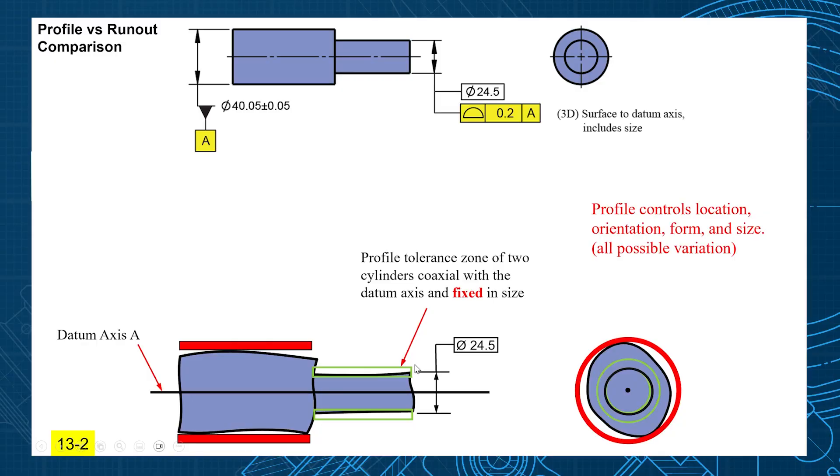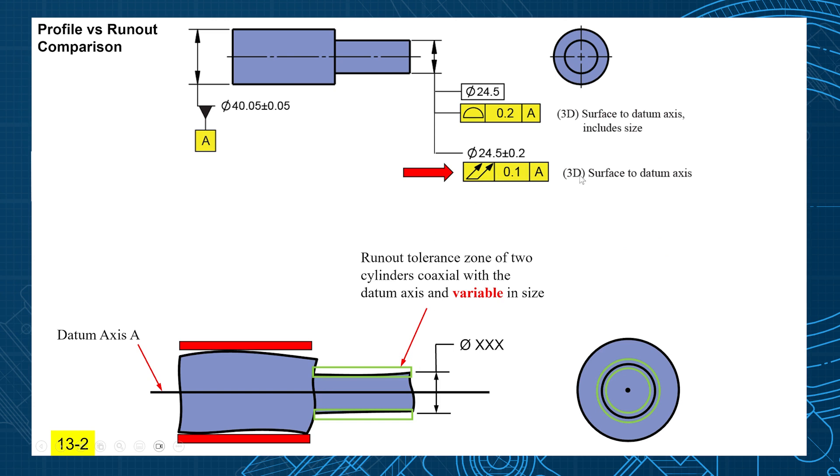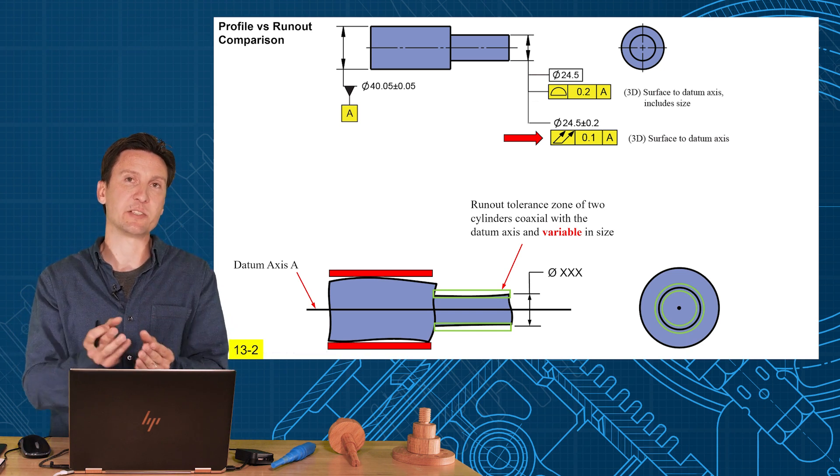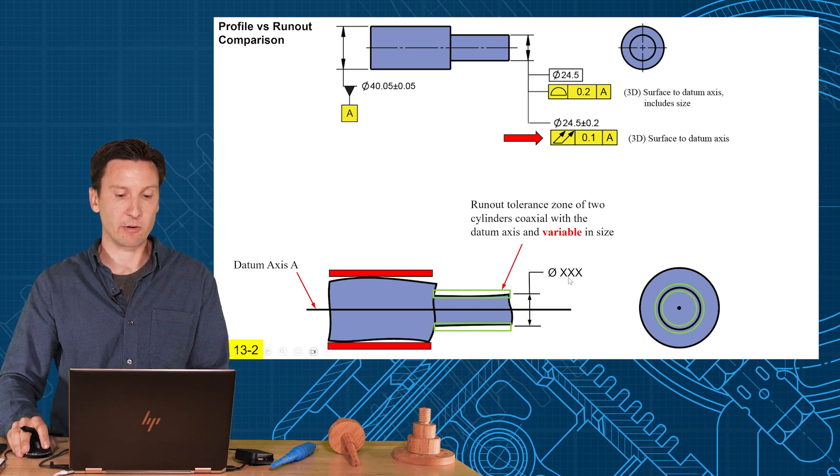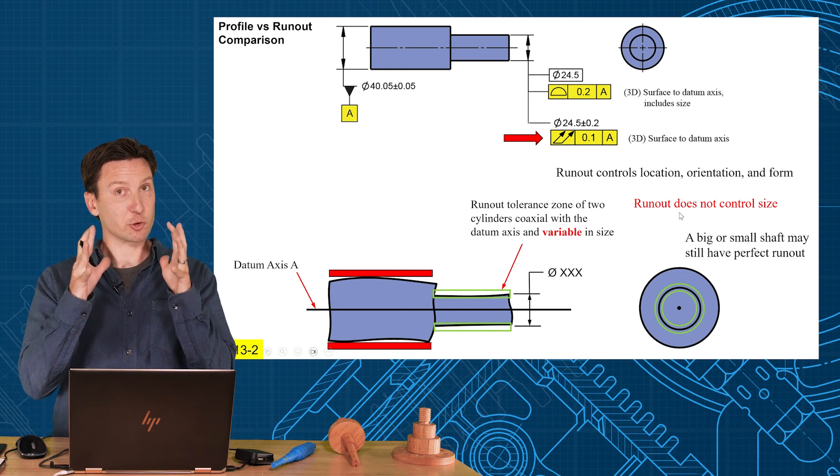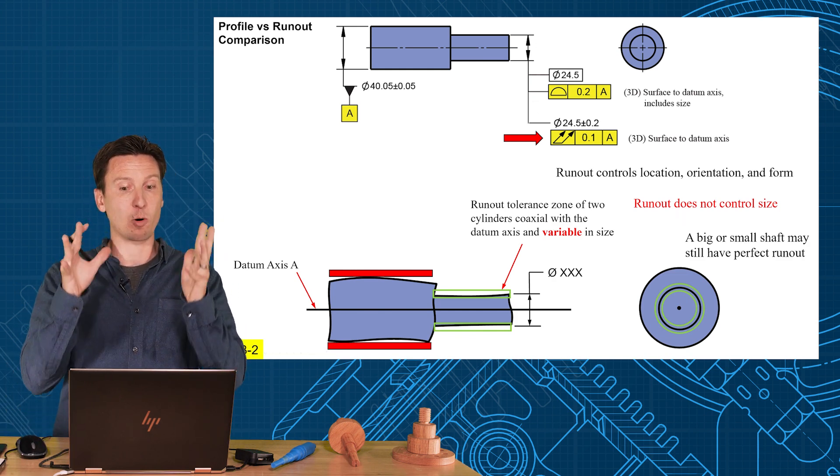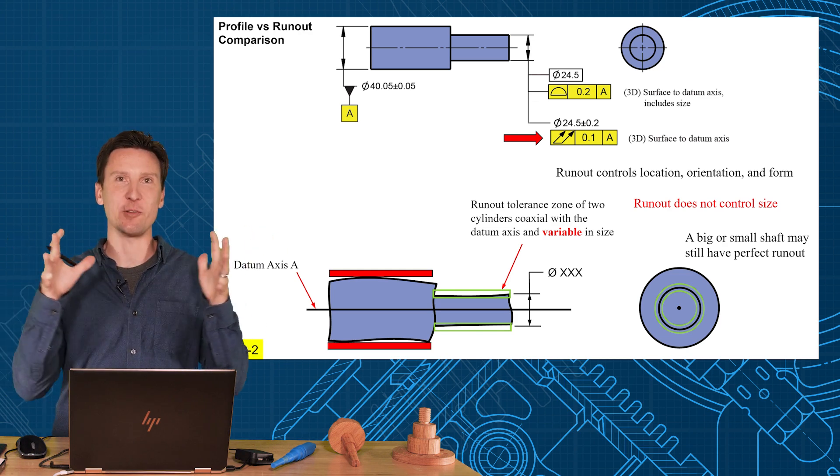So now let's compare that to runout. Runout is also a surface control, but it does not include the size. These tolerance zones are now variable in size. You don't have a fixed basic size where the tolerance zone has to be centered around. It could be variable. Now this means that runout is going to control coaxiality, location, the orientation, and the form, but it does not control the size.